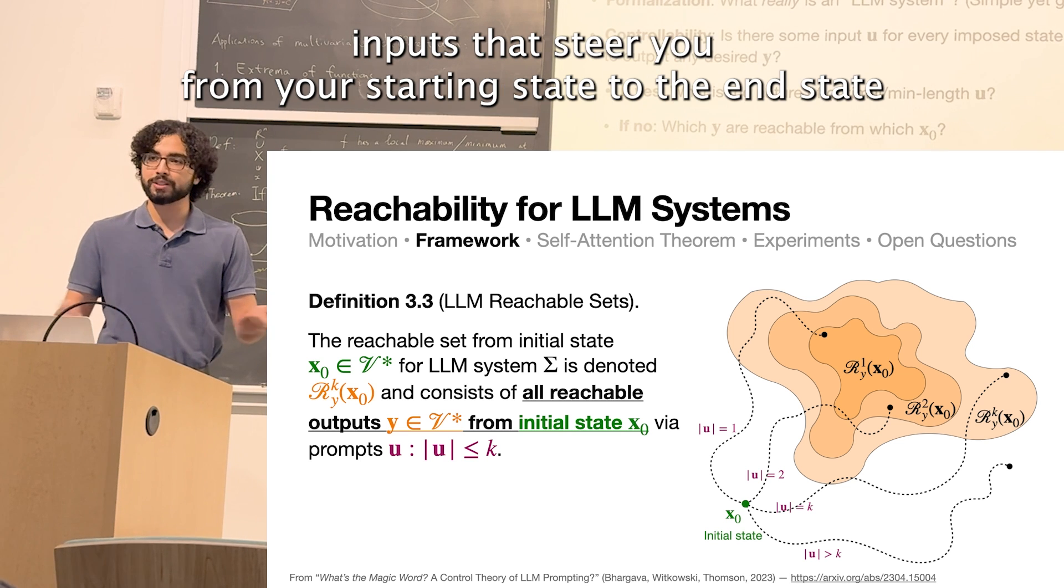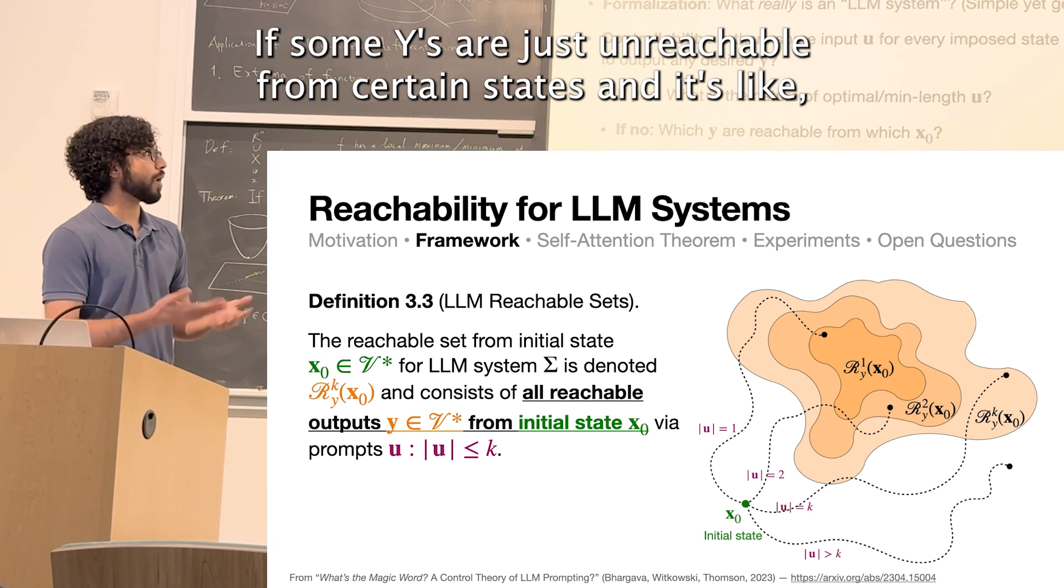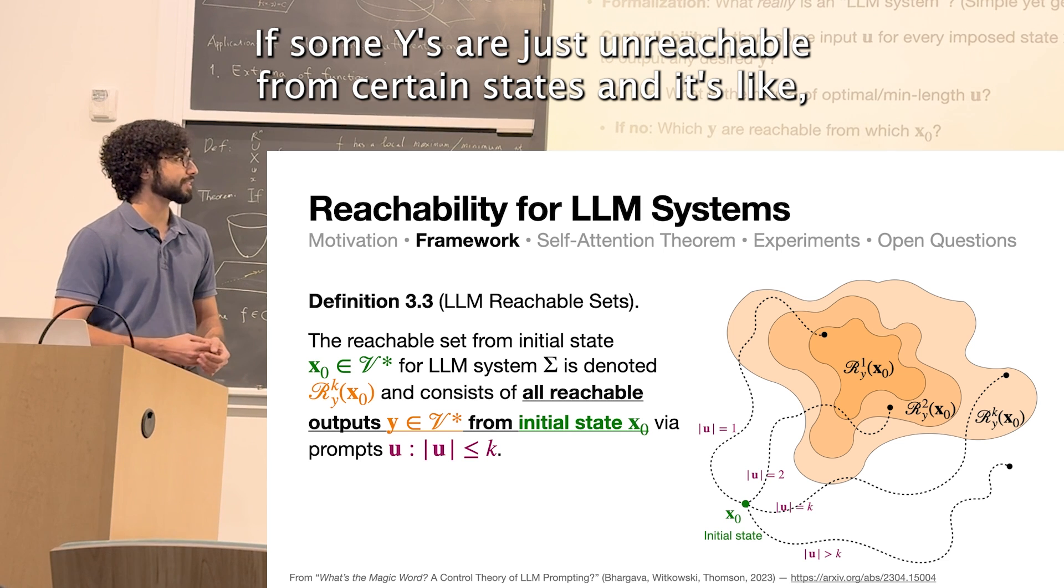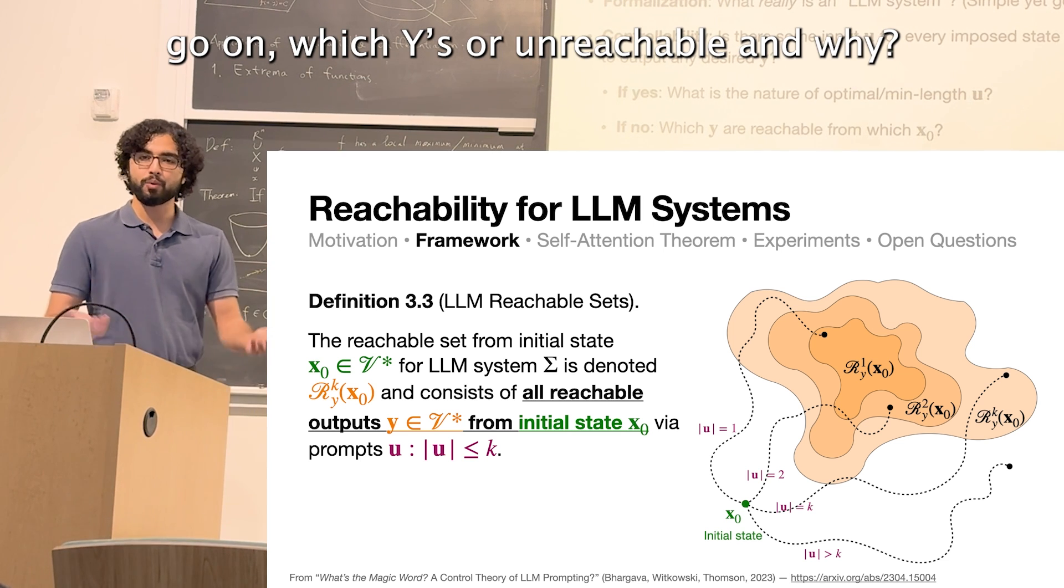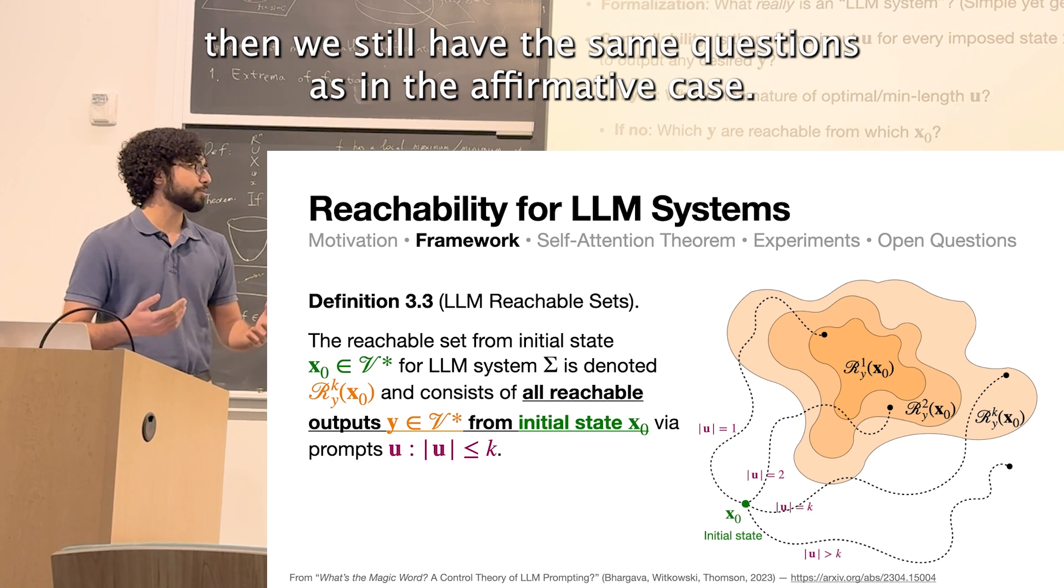what's the nature of those control inputs that steers you from your starting state to the end state? And if the answer is no, if some Ys are just unreachable from certain states, then it's like, okay, well, which Ys are unreachable and why? And for the ones that are, then we still have the same questions as in the affirmative case.